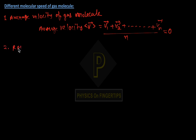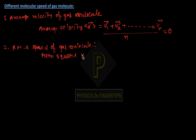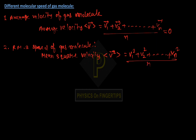Next, let's discuss the RMS Speed of a gas molecule. RMS stands for Root Mean Square. First, we define Mean Square Velocity. Mean Square Velocity equals V1 squared plus V2 squared plus up to Vn squared upon n. Now, RMS Velocity is obtained by taking the root of the mean square velocity.